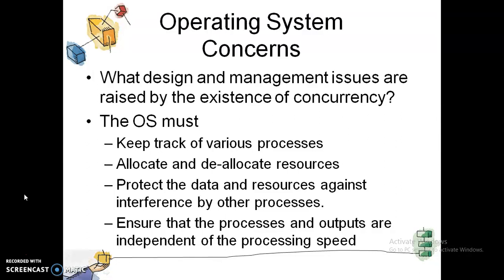Here is some more explanation about the operating system and concurrence. The OS must keep track of various processes. By keeping track of processes, it will be able to organize them according to their nature, making it easier to allocate resources. Also, the OS should protect data and resources against interference by other processes, since processes are interacting. There should be some means of protection, and the OS is responsible for that. The OS can also ensure that process output is independent of processing speed.